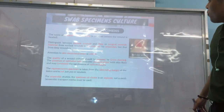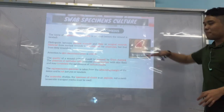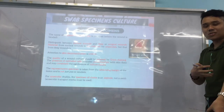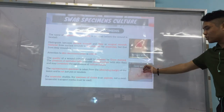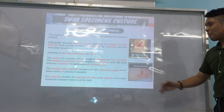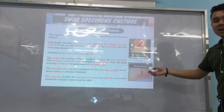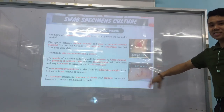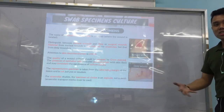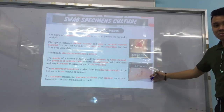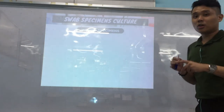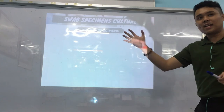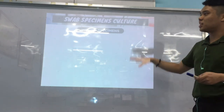Surface wounds are exposed to oxygen at the skin level — like a scratch — while deep wounds show swelling with pus inside, creating an anaerobic environment. There's no oxygen reaching deep inside, so anaerobes can thrive there. The discussion of wound specimens will continue in the next video, as there is more to cover on this topic.